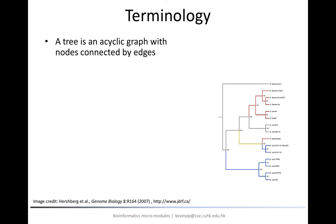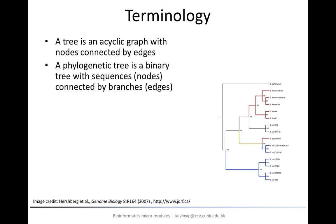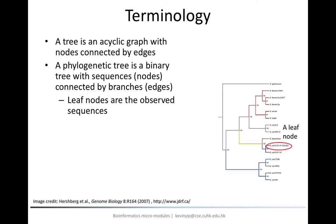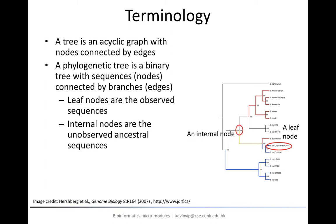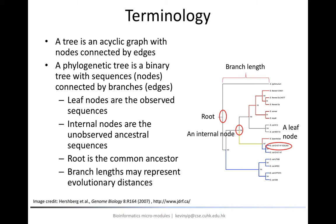Before we end this module, let us define some terms related to phylogenetic trees that we will use in the coming modules. Recall that in computer science, a tree is defined as a graph with no cycles. In phylogenetic trees, each node represents a sequence and each edge connects an ancestral node to a descendant node. The leaf nodes represent the currently observable sequences, each internal node represents an unobserved ancestral sequence, the root node is the common ancestor of all sequences, and the branch length may represent the evolutionary distance — the amount of time between two divergence events connected by that branch.